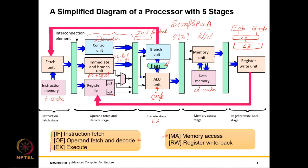Once a load is done, we need to write the read value — or the value computed by the ALU — to the register file. This is done in the fifth stage: the register write-back unit. It writes results back to the register file. This is a simple processor with no pipelining, logically divided into five stages because there are five distinct parts doing rather different things.